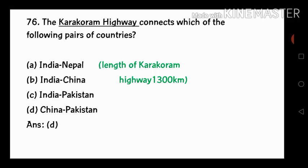Next question is number 76: the Karakoram Highway connects which one of the following pairs of countries? The options are India-Nepal, India-China, India-Pakistan, China-Pakistan. The answer is China-Pakistan, because the Karakoram Highway connects China and Pakistan.